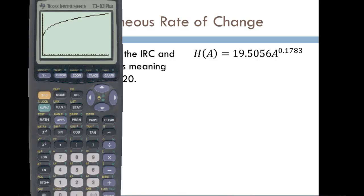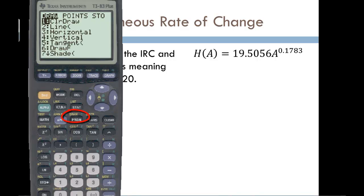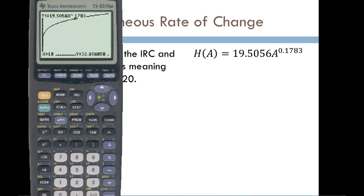To get the instantaneous rate of change there's several different ways we can do it. But on our calculator we can go into the draw menu which is second and the program button. And we're actually going to have it draw the tangent line which is option number five. And then we need to specify where we want it to draw. So in this case when x was 20. So just type in the number 20 and press enter. And you can see it will draw this line in. That's tangent to the function at x equals 20. And what we're looking for is the slope of the tangent line. Which in this case our slope is 0.297.